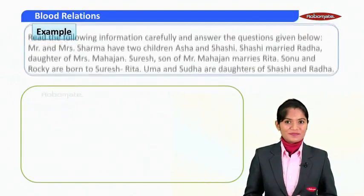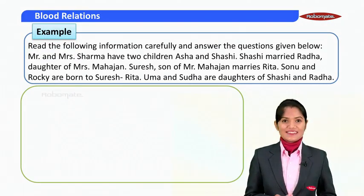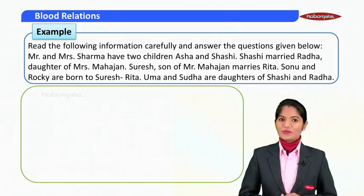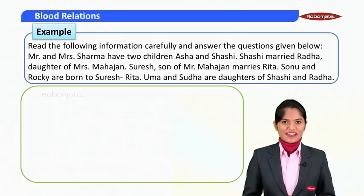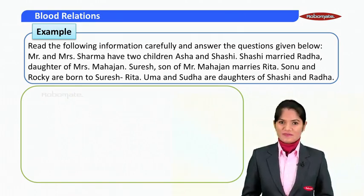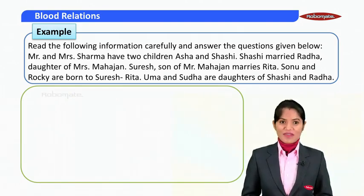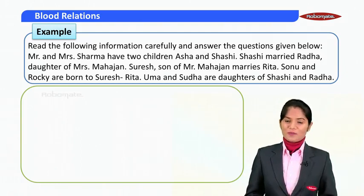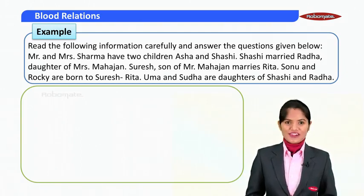Let's see the first example. Read the following information carefully and answer the question. Mr. and Mrs. Sharma have two children, Asha and Shashi. Shashi married Radha, daughter of Mrs. Mahajan. Suresh, son of Mr. Mahajan, married Rita. Sonu and Rocky are born to Suresh and Rita. Uma and Sudha are daughters of Shashi and Radha.